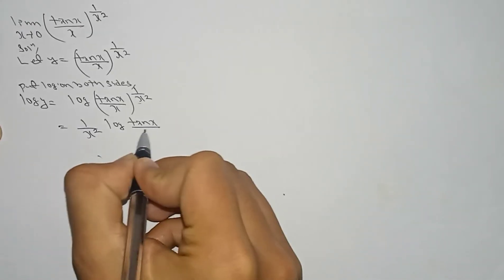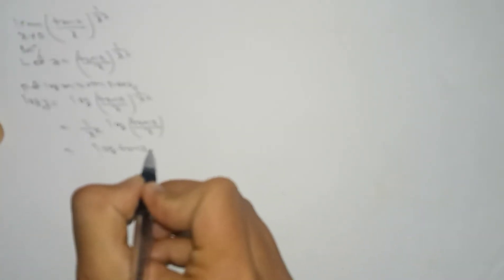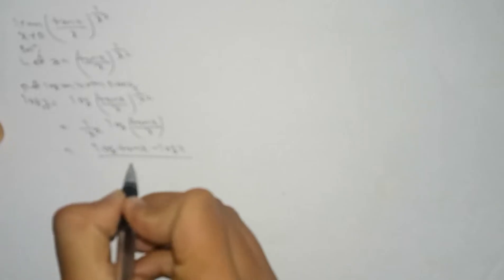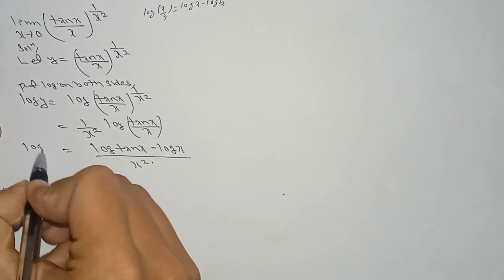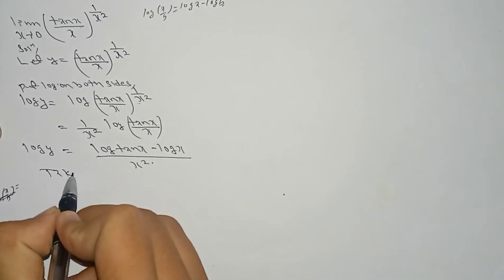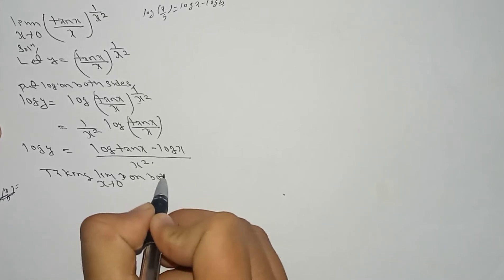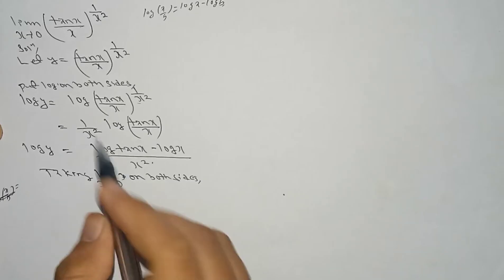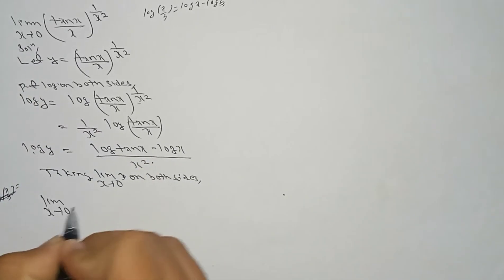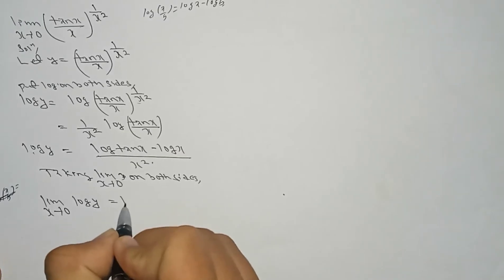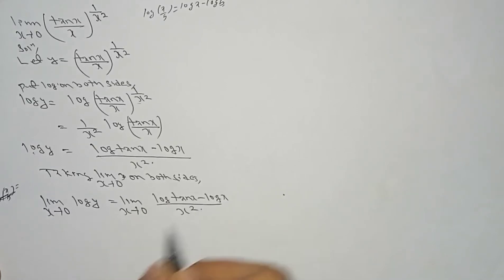So log(tan x / x) means this can be rewritten as log tan x minus log x, since log(a/b) = log a − log b. So here we have log y equal to, taking the limit x tends to 0 on both sides, limit x tends to 0 of (log tan x − log x) / x².